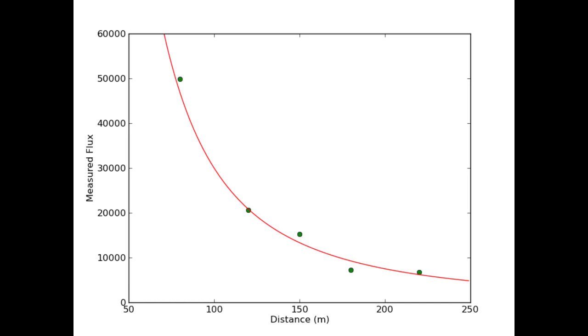The reason it doesn't fit the data perfectly is because there's uncertainty, both in how far away the objects are and how we measure them, but probably more to how we measure how bright the objects, the lights, appear on the detector. That turns out to be quite a challenging thing to do, given the shape of the light bulbs.